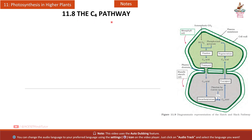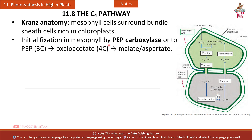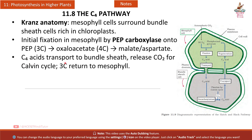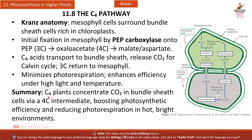Section 11.8 The C4 pathway — Kranz anatomy: mesophyll cells surround bundle-sheath cells rich in chloroplasts. Initial fixation in mesophyll is by PEP carboxylase onto PEP (3C) to form oxaloacetate (4C), then malate or aspartate. C4 acids transport to bundle-sheath cells, release CO2 for the Calvin cycle, and 3C compounds return to mesophyll. This minimizes photorespiration and enhances efficiency under high light and temperature.